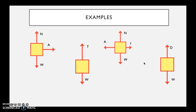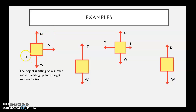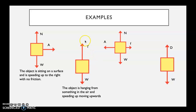Looking at the first example with labeled arrows, I can tell the object is sitting on a surface. If there's a normal force, the object is resting on something solid, so it's not in the air. I can tell it is speeding up to the right because the applied force is in the rightward direction — applied always goes in the direction of motion — and there's no friction, so it must be speeding up.